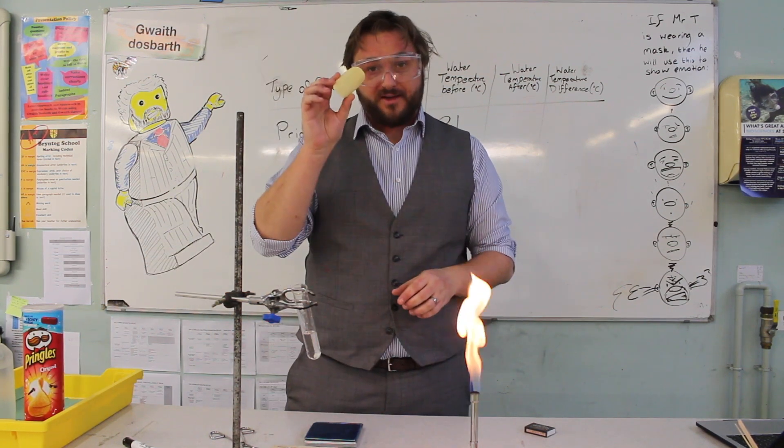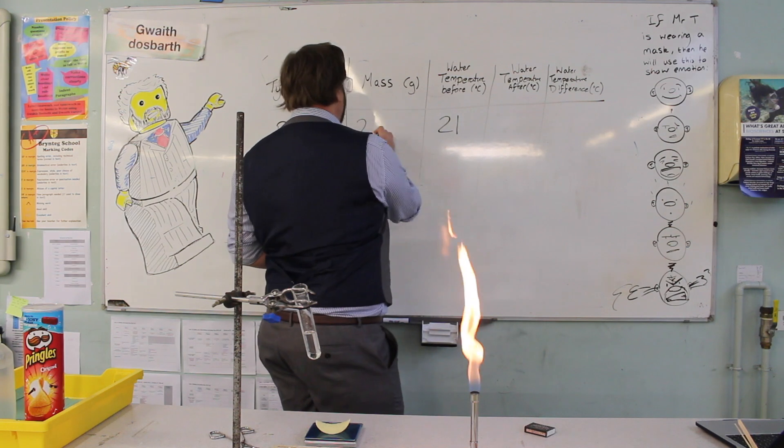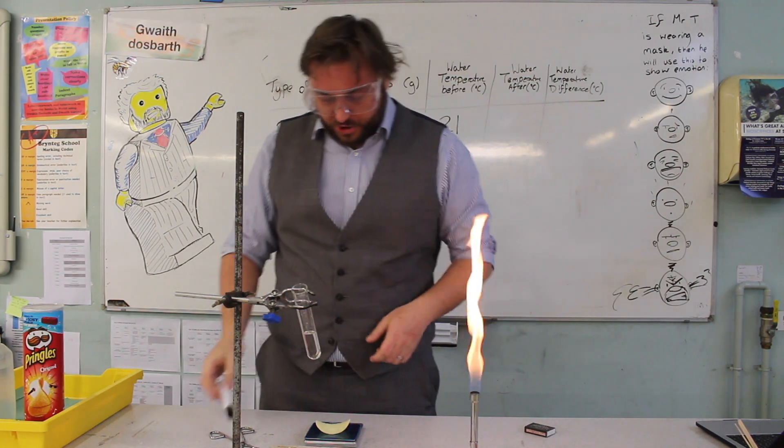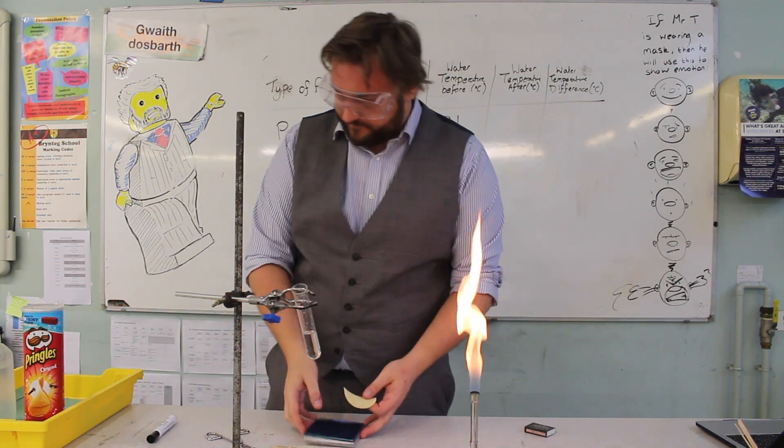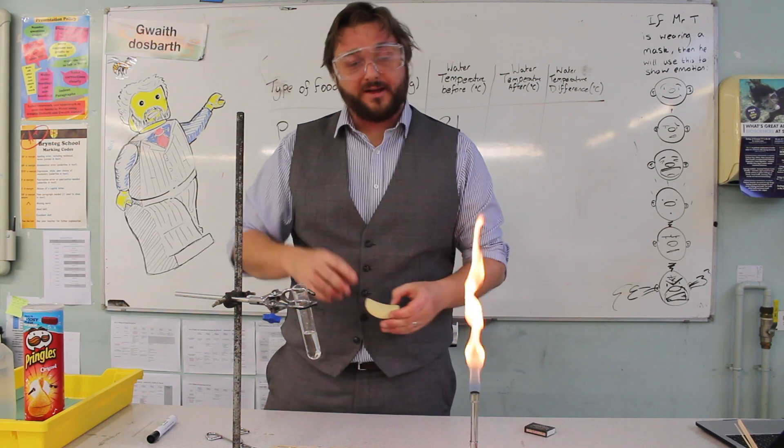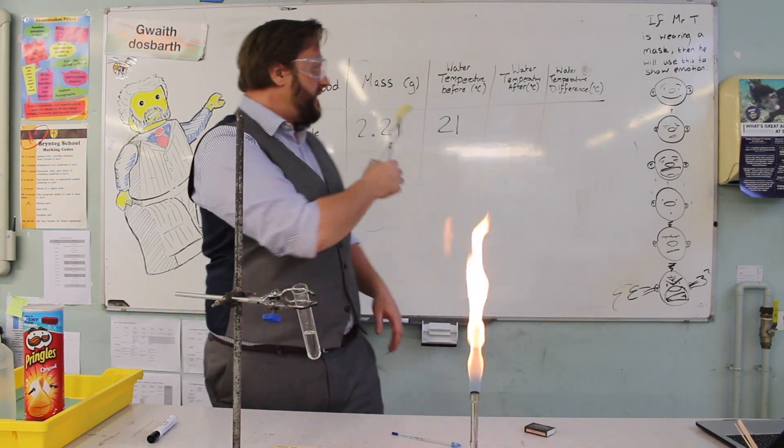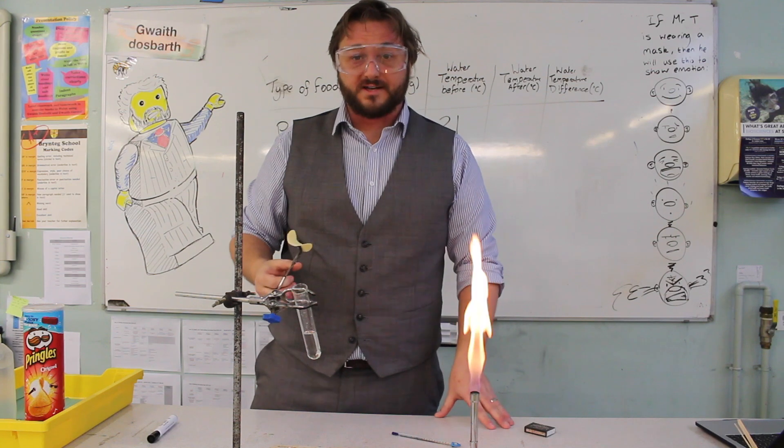You want to measure the mass of your crisp. And my crisp is 2.21 grams. Again, that'll be important later and I'll explain at the end. Once you've taken the mass of the crisp and the starting temperature of the water, you have your equipment set up.